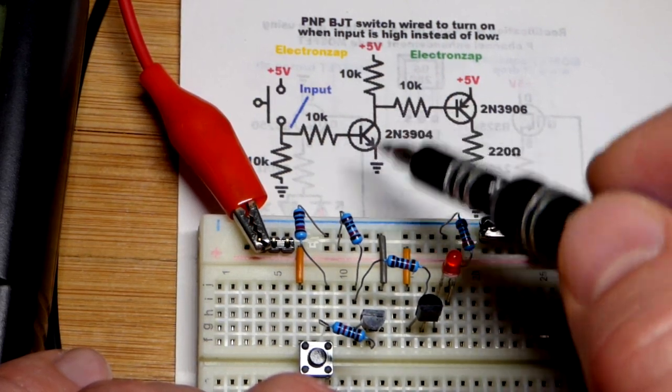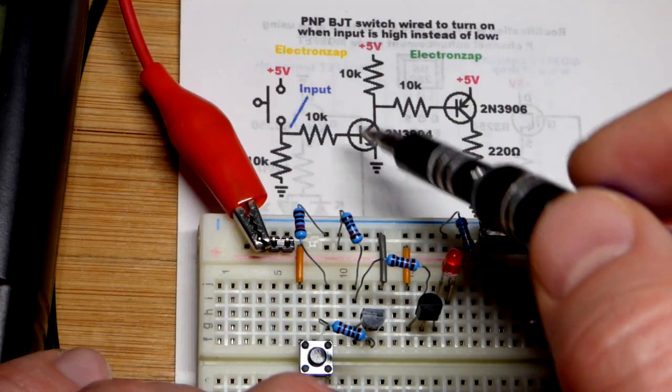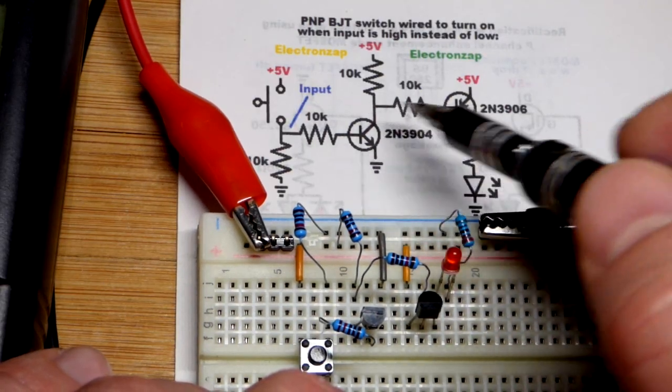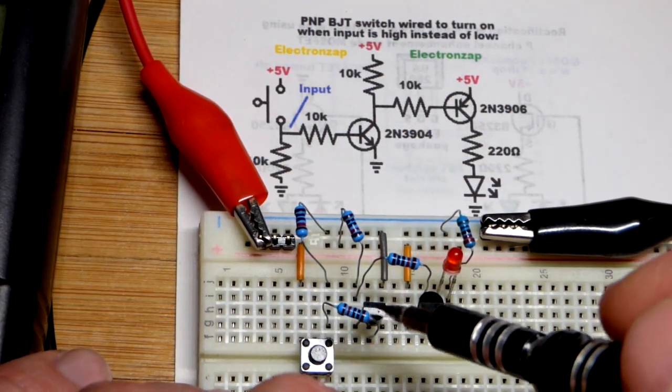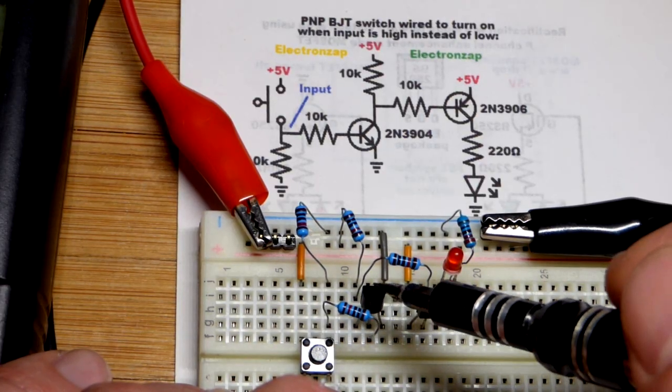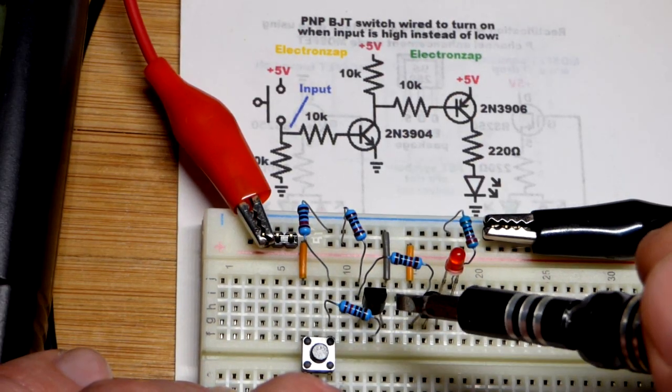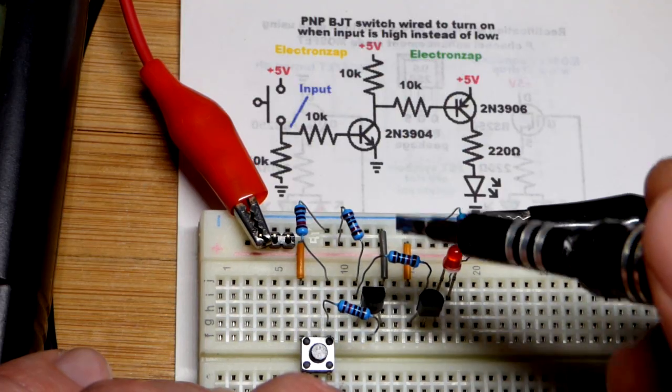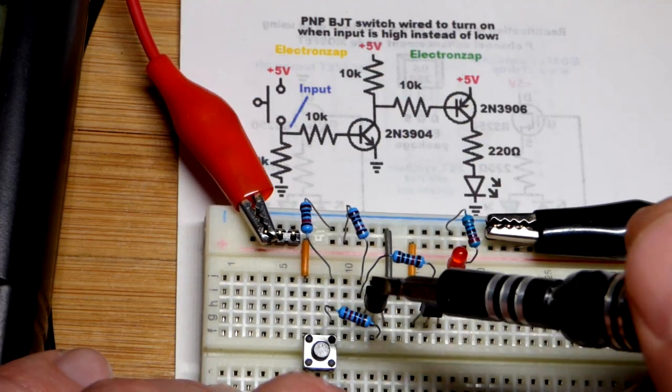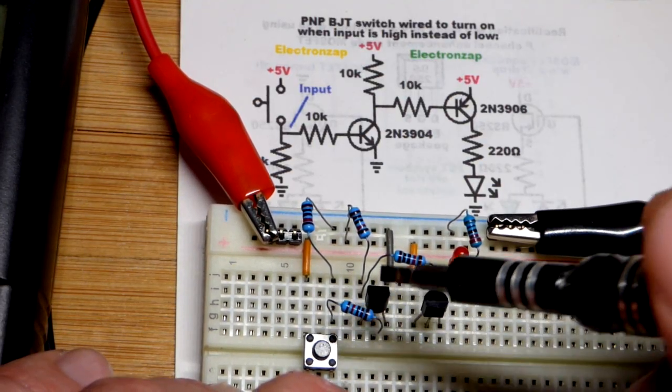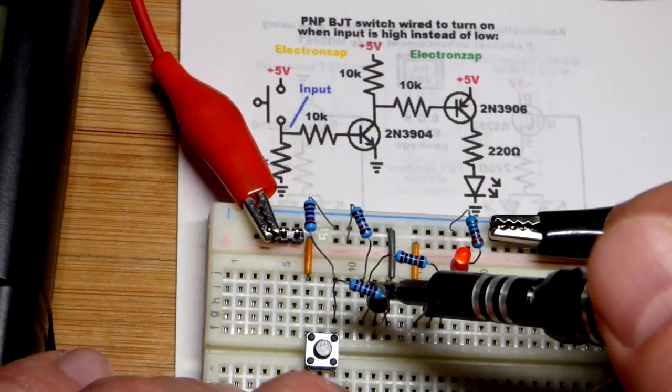You can see the NPN right here facing the other way - emitter is to the right going to the negative supply, base for our signal, and collector to the left.